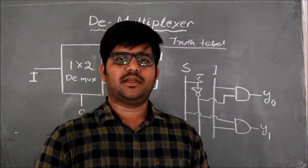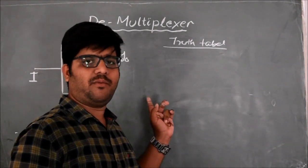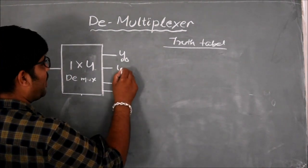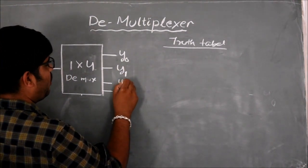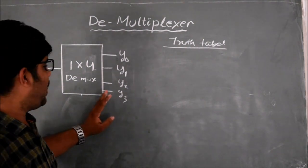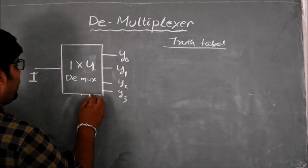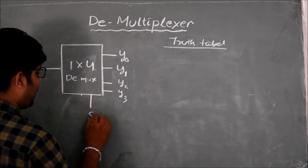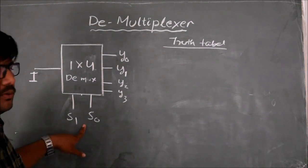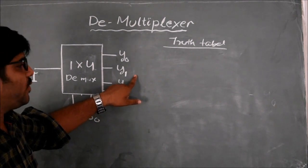Let us study the 1x4 demultiplexer. This is the basic block diagram of a 1x4 demultiplexer. As we have 4 output lines Y0, Y1, Y2, and Y3, we should have two selection lines: S0 and S1. Total 2 selection lines means N is equal to 2, and 2 to the power 2 is equal to 4 numbers of output lines.